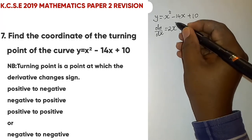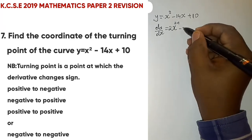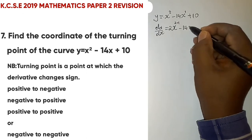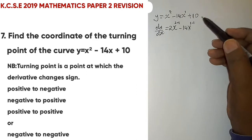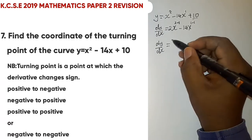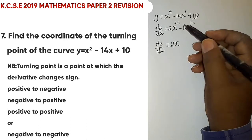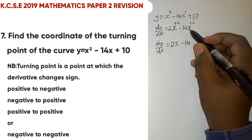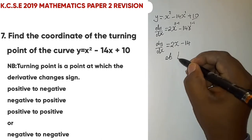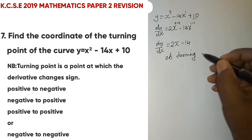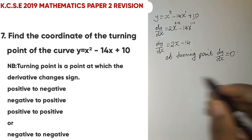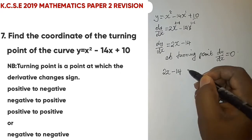Differentiating y = 2x² - 14x + 10: bring the power down and multiply by the coefficient. dy/dx = 2x - 14. The derivative of a constant is zero. At a turning point, dy/dx = 0, so we set 2x - 14 = 0.